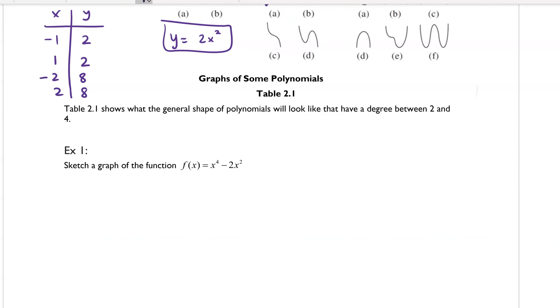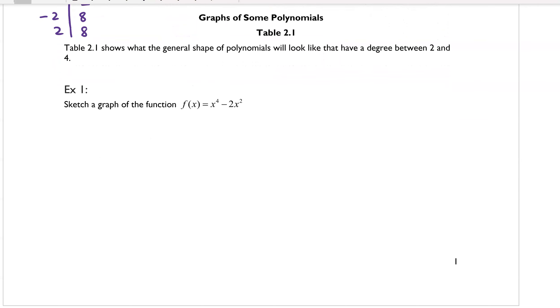Okay, let's talk about our first example. So it says sketch a graph of the function f of x equals x to the 4th minus 2x squared. Now, we just want to notice that this is a quartic, and the degree is 4, because the highest integer exponent there is 4.